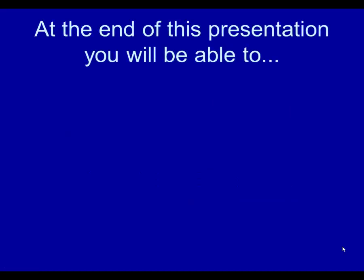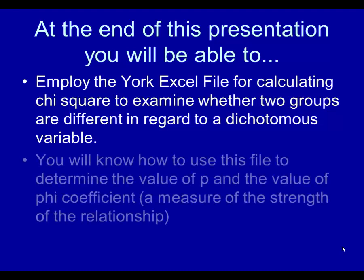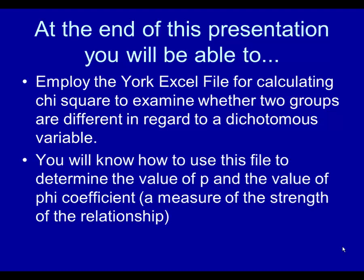At the end of this presentation, you will be able to employ the Excel file that I have composed for calculating chi-square and phi-coefficient, to examine whether two groups are different in regard to a dichotomous variable. You will know how to use this file to determine the value of p and the value of phi-coefficient, which is a measure of the strength of the relationship.